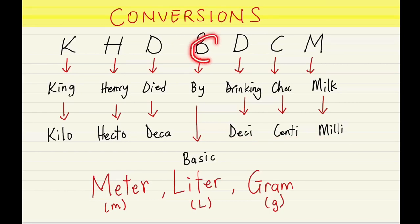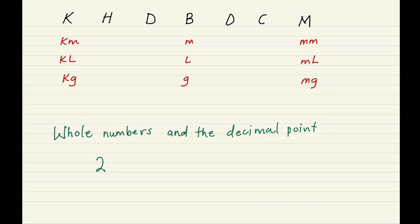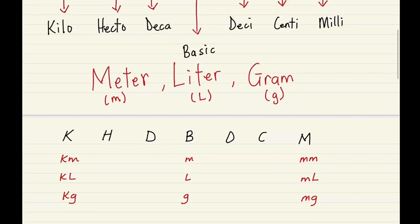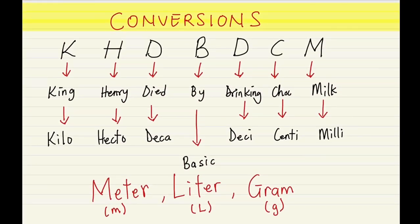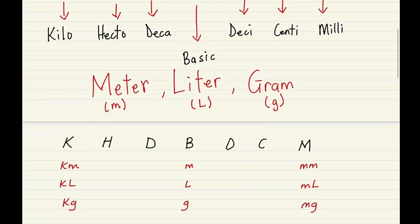The B in King Henry Died By Drinking Chocolate Milk stands for the basic units. What I mean by basic units is the meter, liter, and gram. It will be good if you go back and take a screenshot of the previous screen so that during your exam you could glance at it and it will help you remember.